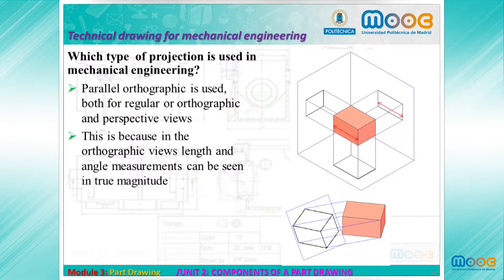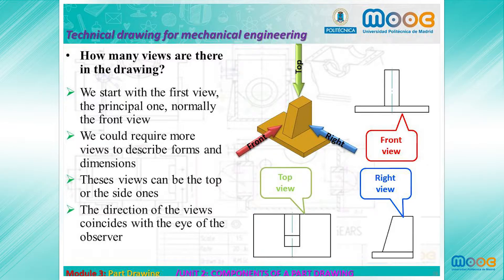With a Direction we obtain a Parallel Projection, which is more precise and easier to do. Parallel Orthographic projection is used in Mechanical Engineering, where the direction is orthogonal to the Projection Plane. We use this type of projection both for regular Orthographic and Perspective Views, because measurements can be done in true magnitude.